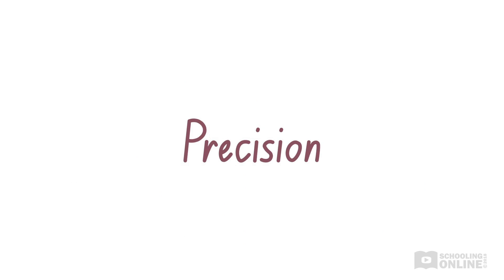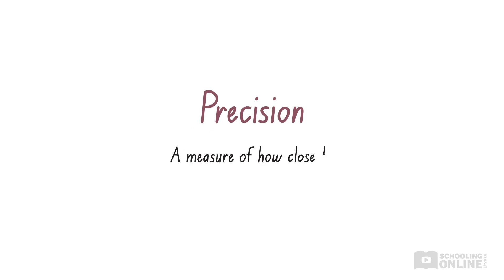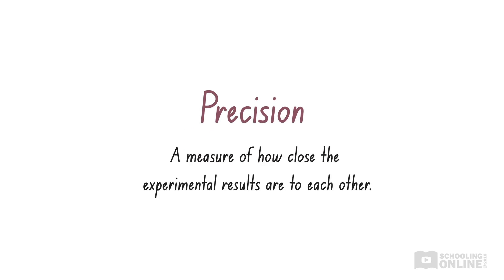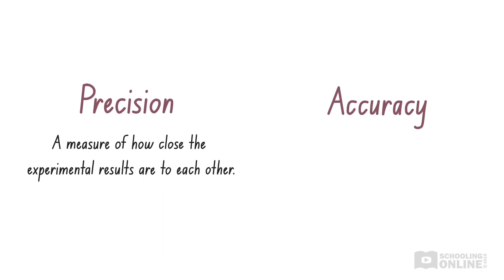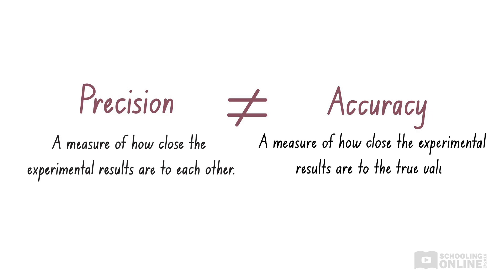Let's discuss the next aspect of reliability, which is precision. Precision is a measure of how close the experimental results are to each other. But beware — when discussing experimental results, use the term precision with caution. Even though precise and accurate are synonyms in normal vocabulary, they are completely different things in science. Accuracy is a measure of how close the experimental results are to the true value, while precision is a measure of how close the experimental results are to each other. Make sure you don't confuse these.